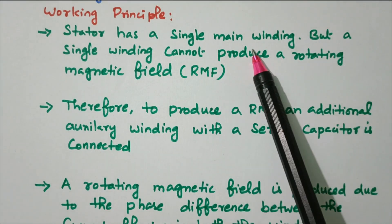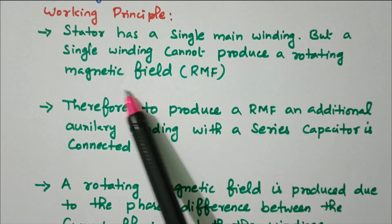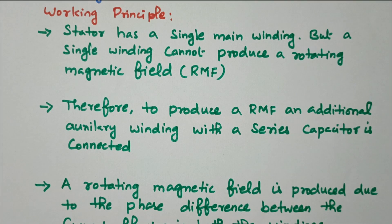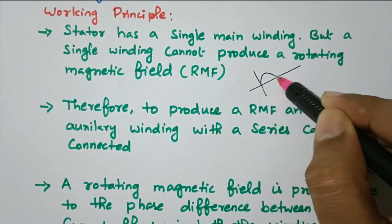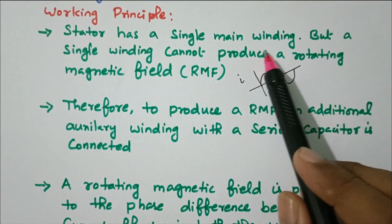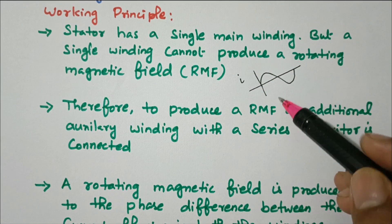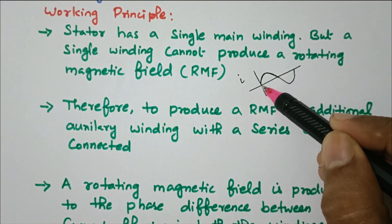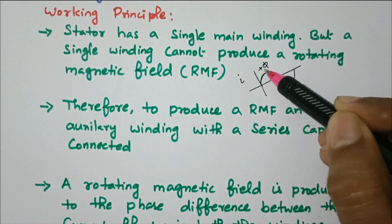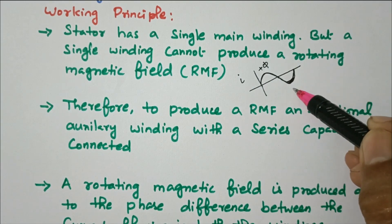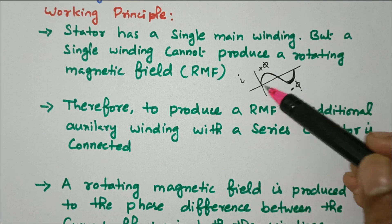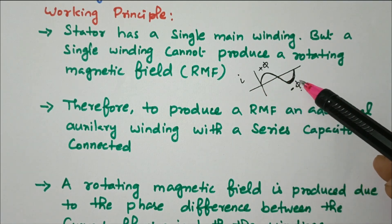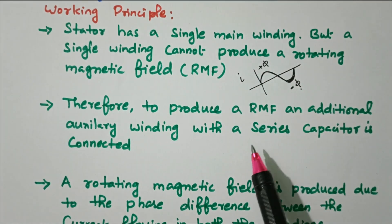Now we'll see the working principle. The stator has a single main winding, but a single main winding cannot produce a rotating magnetic field. With only one winding, there is no rotating magnetic field — a minimum of two windings are required. When alternating current flows through a single winding, during the positive half cycle a positive flux is produced, and during the negative half cycle a negative flux is produced. The sum of positive and negative flux is zero, so they cancel each other and there is no rotating magnetic field in the case of a single winding.